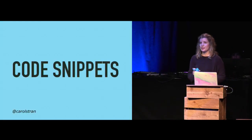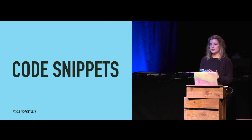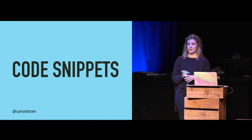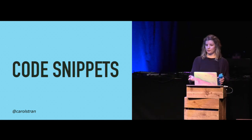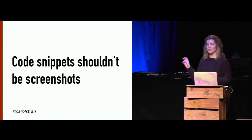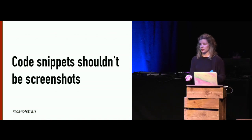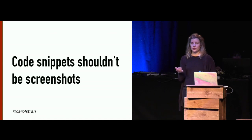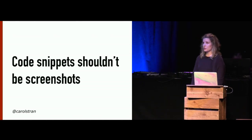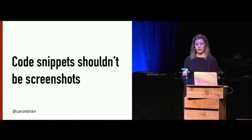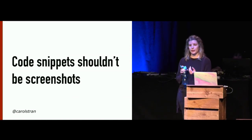I also want to talk about code. Code snippets are understandably very common in documentation, so we should give them just as much care and consideration as the words we write. I'll start by pointing out that code snippets should never be screenshots. This is for accessibility reasons — without alt text, the code is unreadable if you're using assistive technologies. But logically speaking, it's much more in your favor to write out the code. This way, people can copy and paste to try things out, or even interact with your code if you have some sort of playground embedded in it.